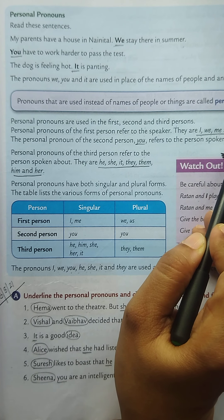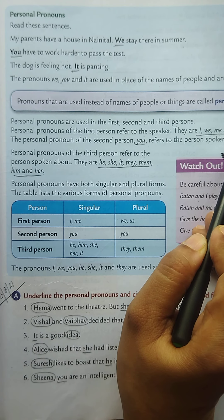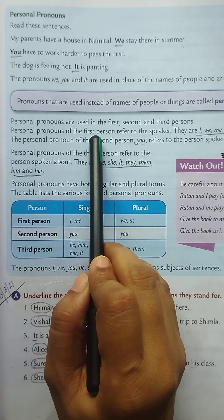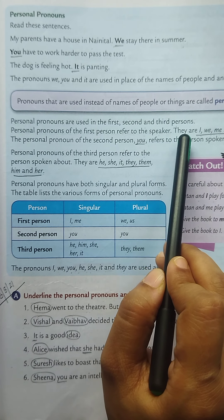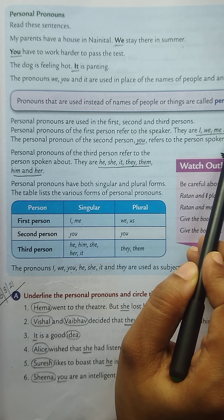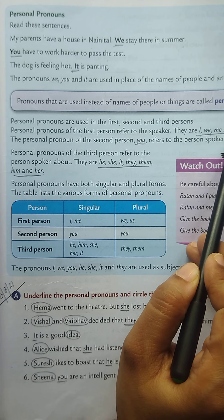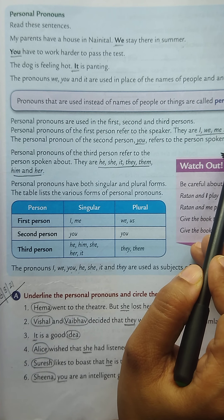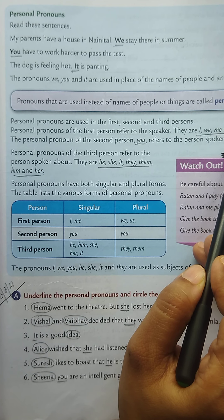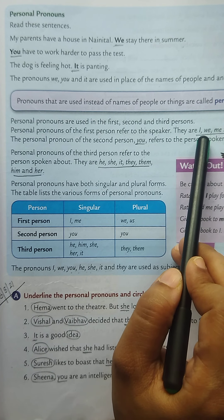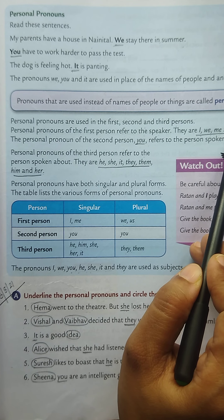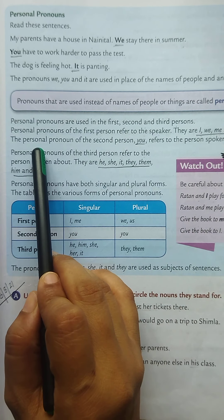The definition of personal pronouns: pronouns that are used instead of names of people or things are called personal pronouns. Personal pronouns are used in the first, second, and third persons. Personal pronouns of the first person refer to the speaker. They are I, we, me, and us.